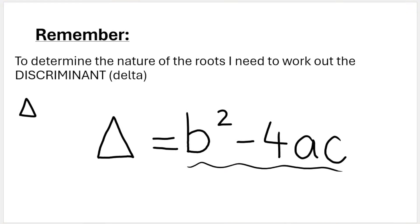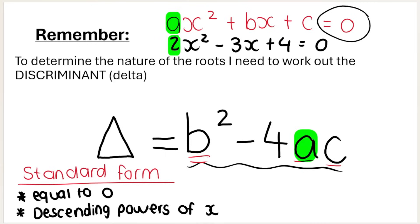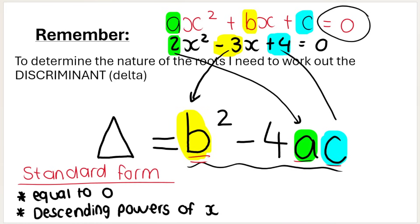Here's another way to think about it. We work out delta using this formula, which you need to remember — it comes from the quadratic equation. Where do I get b, a, and c from? When your equation is in standard form, equal to zero, and in descending powers of x — starting with x squared, then the x term, then the constant — then a is the coefficient of the squared term, b is the coefficient of the x term, and c is your constant term.